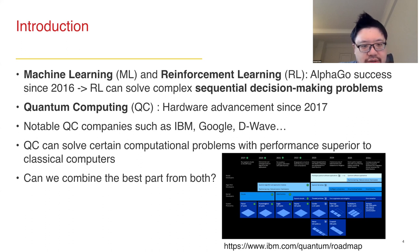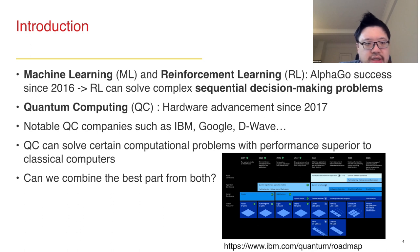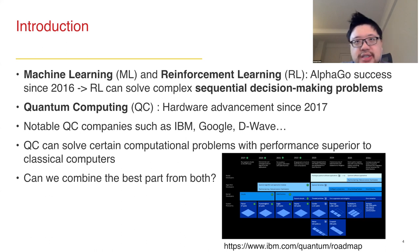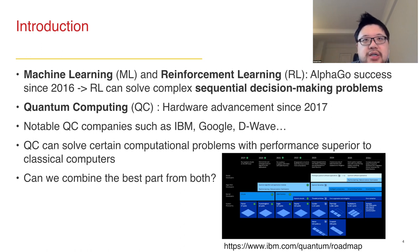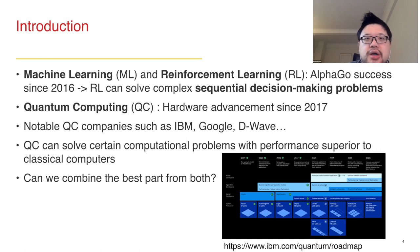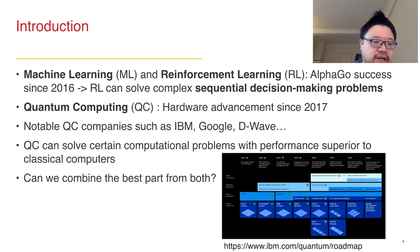Quantum computing has been shown to solve certain computational problems with performance superior to classical computers. So we can ask the question: can we combine the best parts from both classical machine learning and quantum computing to solve even more complex problems? Here is the roadmap for IBM — they already released their state-of-the-art 433-qubit machine last November, and they plan to release even higher quantum volume devices in the future. We can expect that potential quantum applications will be very important and beneficial.